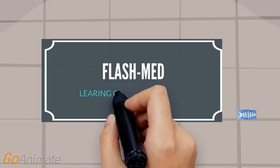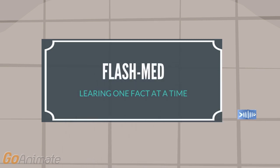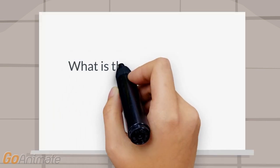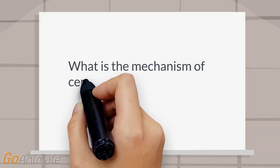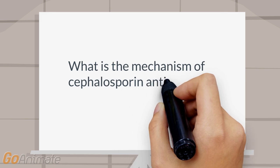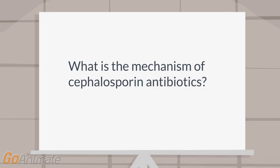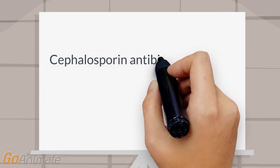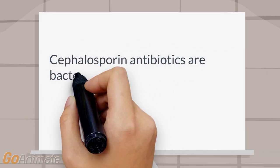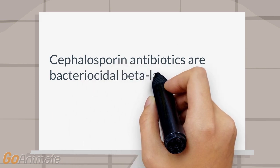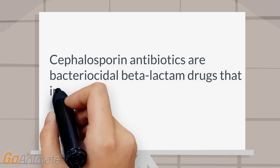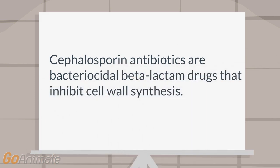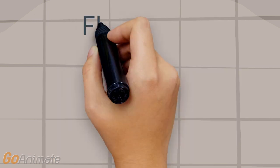What is the mechanism of Cephalosporin antibiotics? Cephalosporin antibiotics are bacteriocidal beta-lactam drugs that inhibit cell wall synthesis.